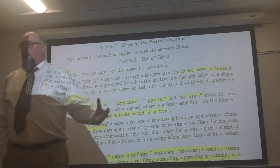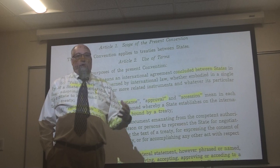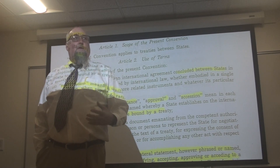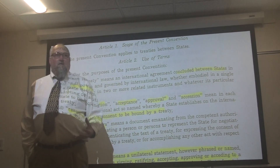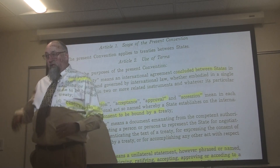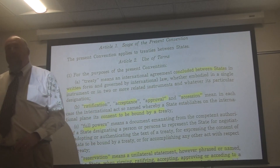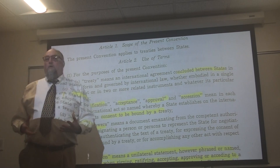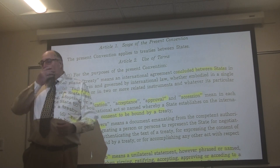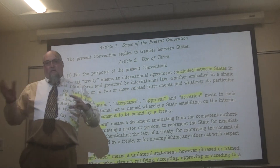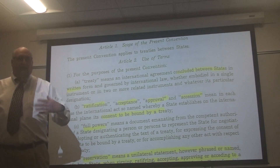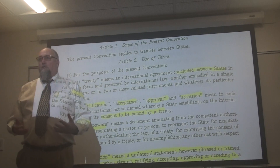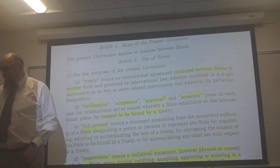We talked about executive agreements whereby the president or other head of state may enter into an agreement that doesn't rise to the level of a technical treaty. Theoretically states could agree to formalize a verbal agreement, but ultimately there must be a written document that embodies the treaty under the Vienna Convention rules.